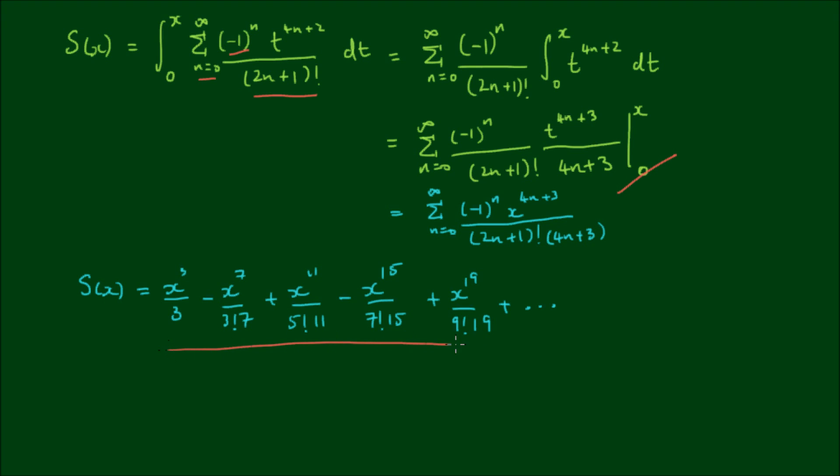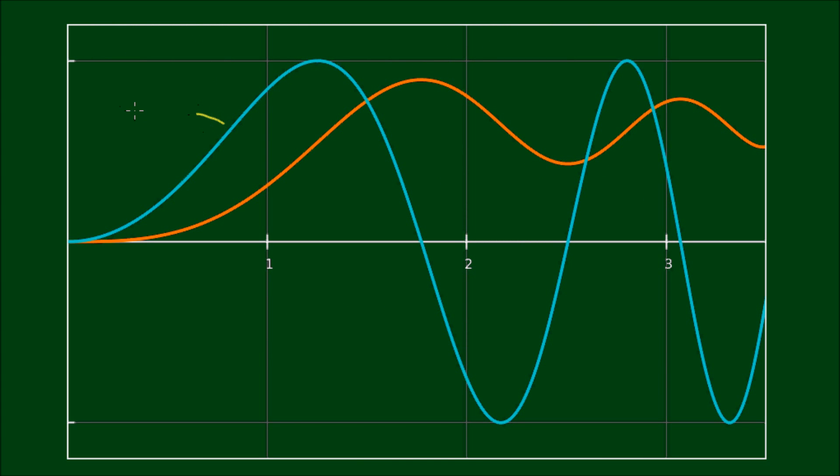And if we take these few terms, and maybe a couple more, and plot them as a polynomial, we should get a graph that looks something like this. So here the cyan curve corresponds to the function sin(x²), which can also be considered S'(x). And the orange curve is S(x), which of course is equal to the integral from x equals 0 to x of sin(t²)dt.